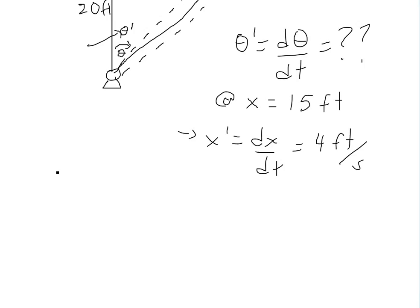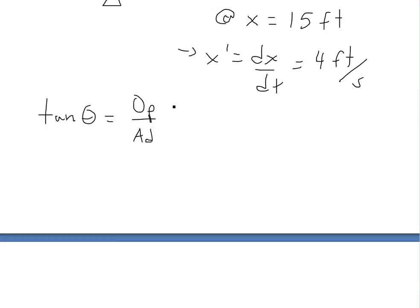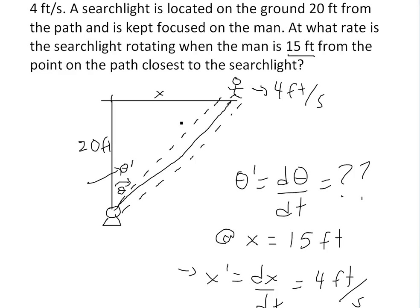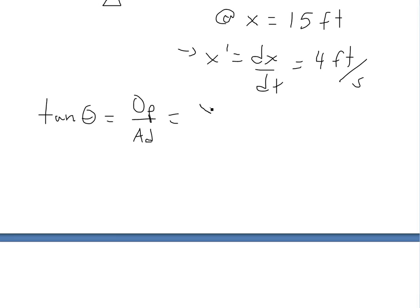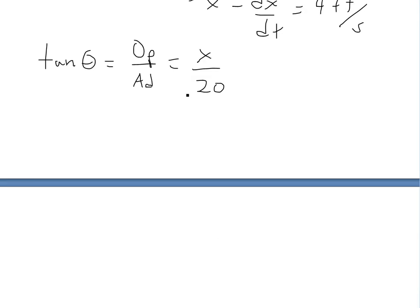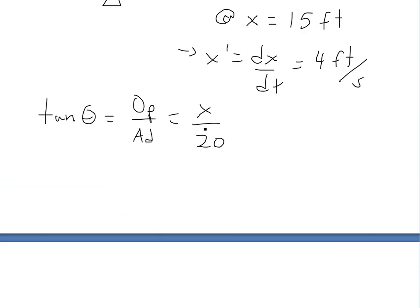If you look at this triangle, we know that the tangent of the angle equals opposite over adjacent. This gives us tan θ = x over 20. You can see more on this in my trigonometry videos in the links below. Now we use implicit differentiation and take the derivative of both sides, because both x and theta are functions of time, so we'll have to apply the chain rule as well.